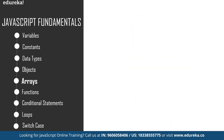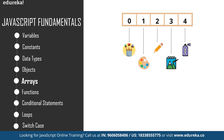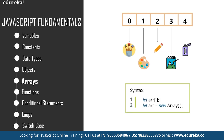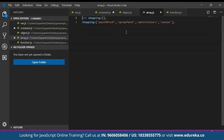An array is a data structure that contains a list of elements storing multiple values in a single variable. For example, if you went shopping to buy art supplies, the list of items could be put into an array. To declare an array in JavaScript, we use the let keyword with square brackets, and all array elements must be enclosed within them. When you don't insert any value, it is an undefined array, and you can put any number of values inside.